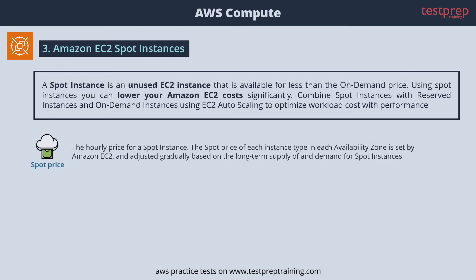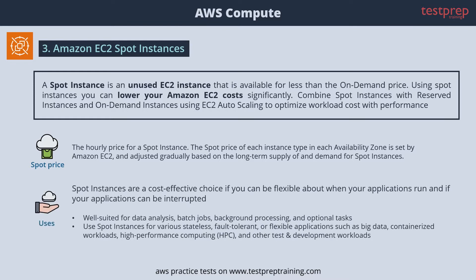The hourly price for a spot instance is called a spot price, and the spot price of each instance type in each availability zone is set by Amazon EC2 and adjusted gradually based on the long-term supply of and demand for spot instances.